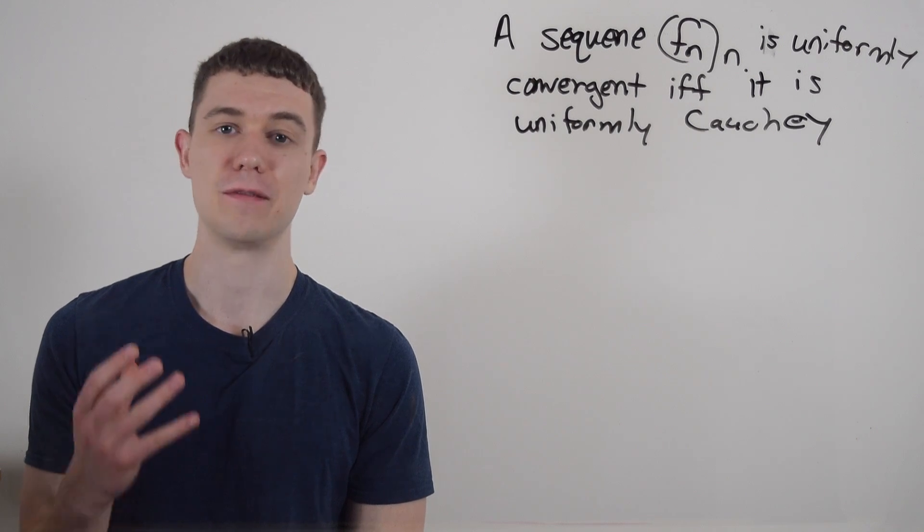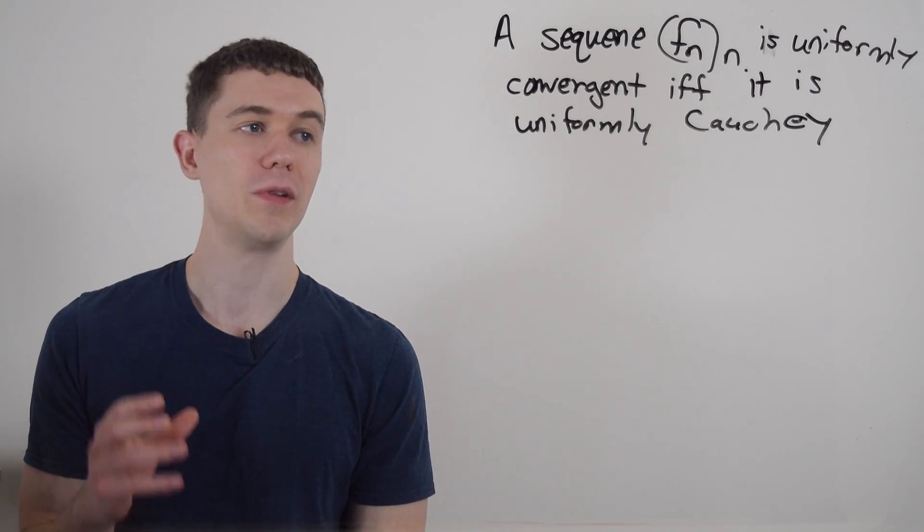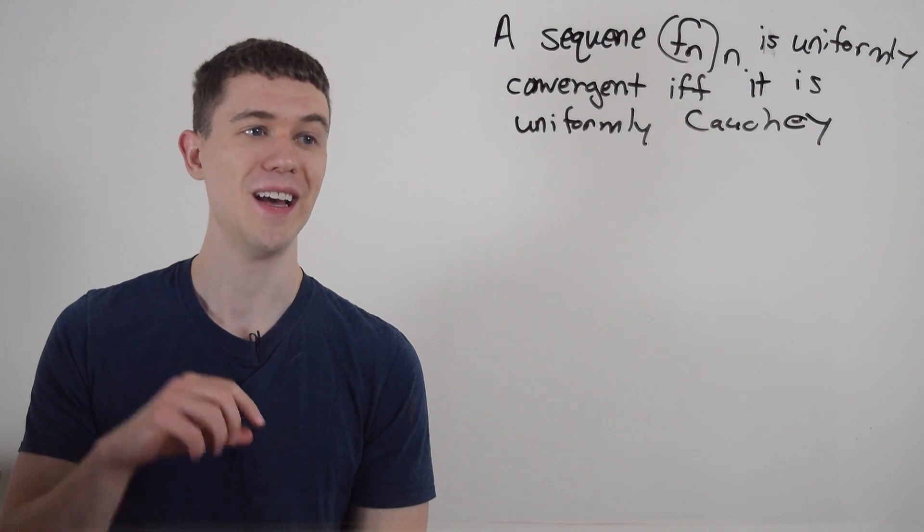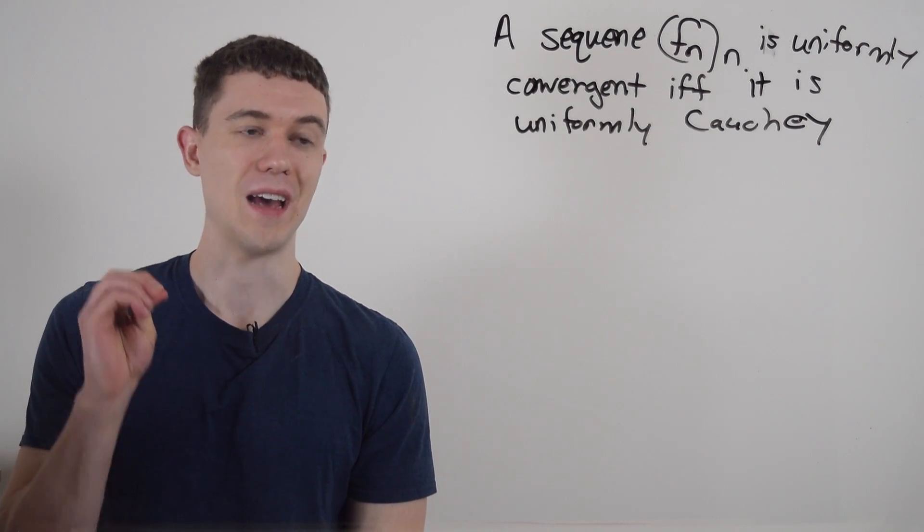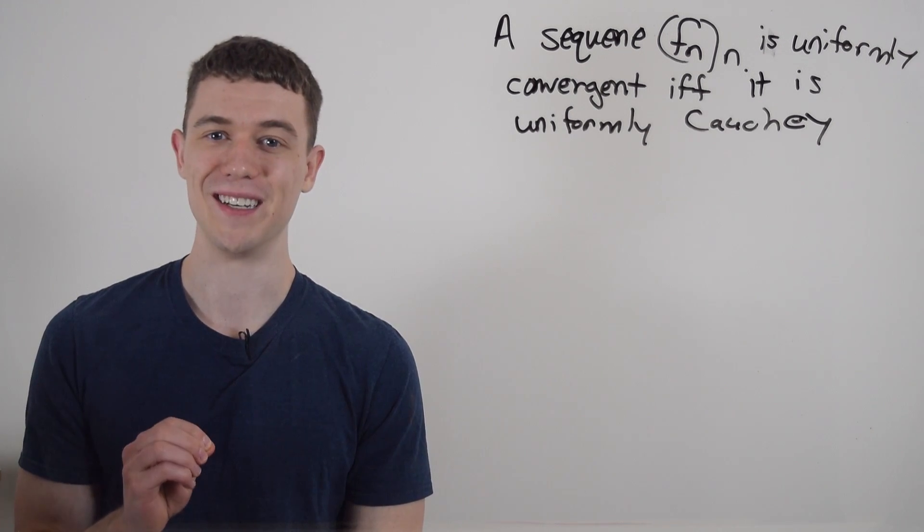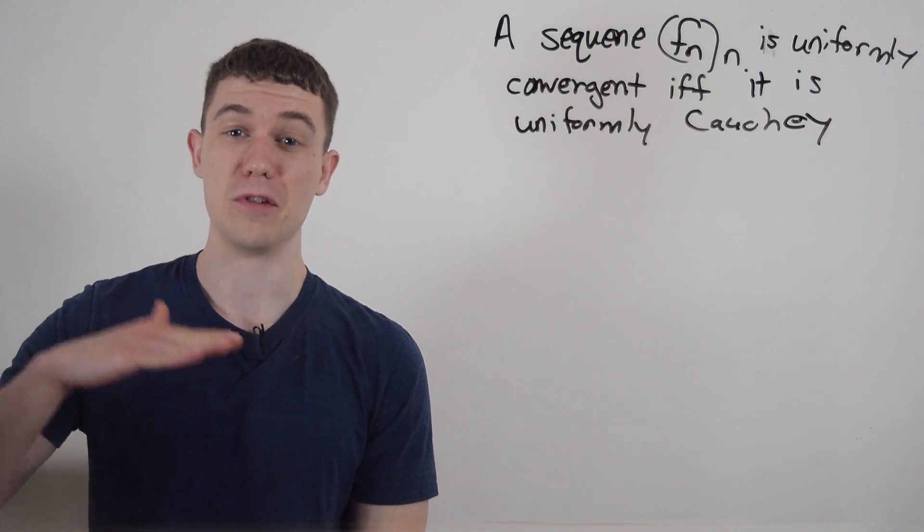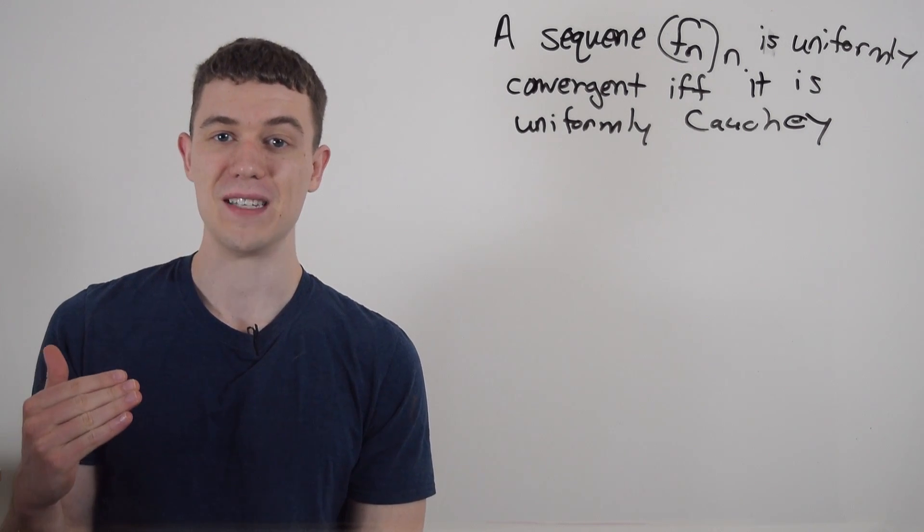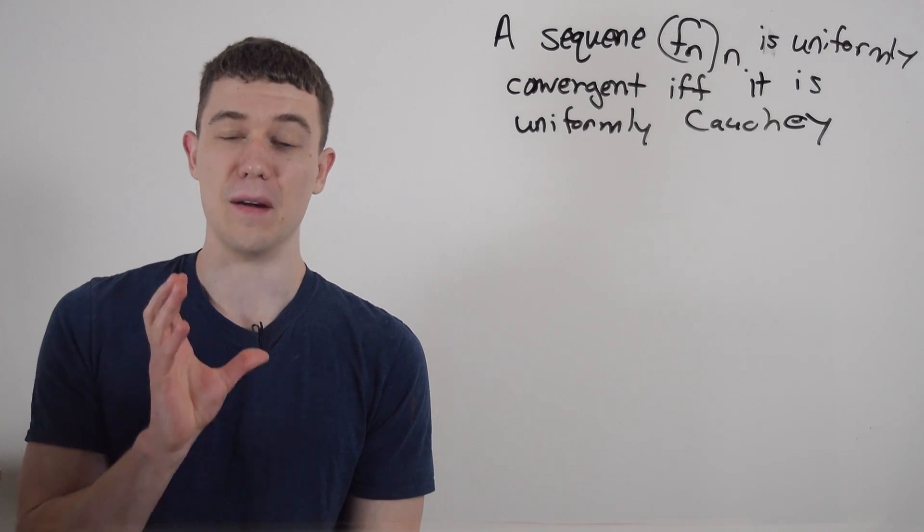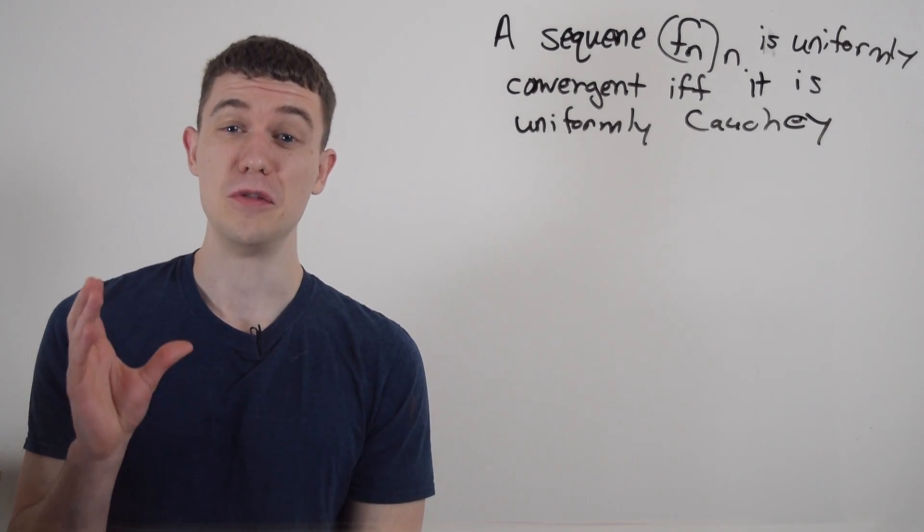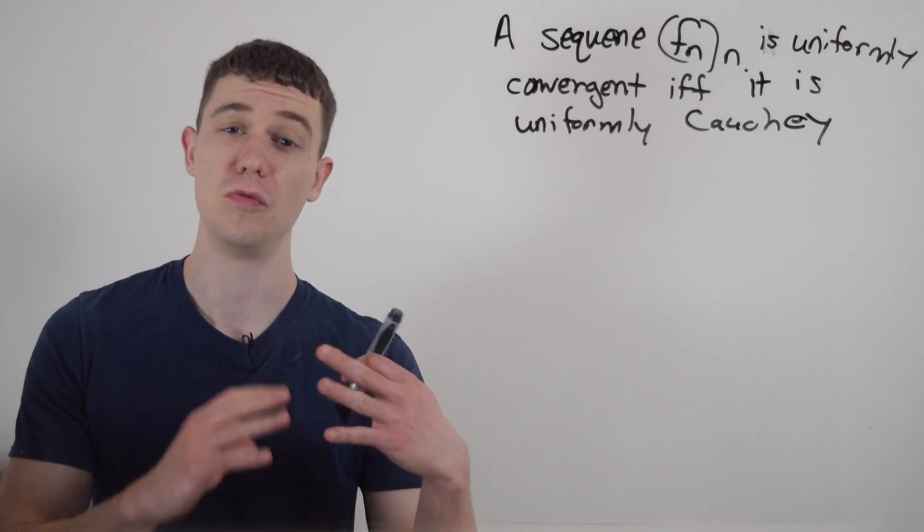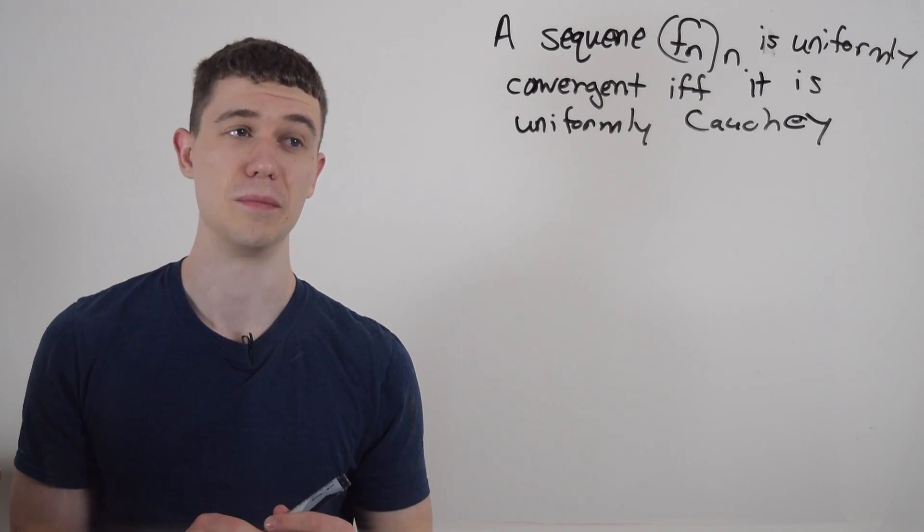It says that a sequence of functions is uniformly convergent if and only if it is uniformly Cauchy. That's a two-way street. So first I'm going to assume the former and prove the latter and then go vice versa. You need to know what these two things mean. I'm not going to define them right here but I will review them when they show up in the proof.